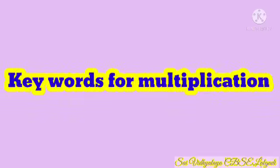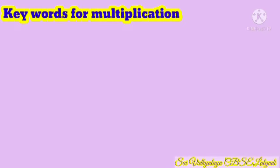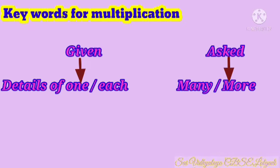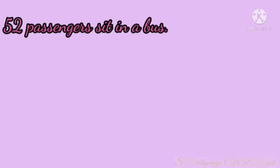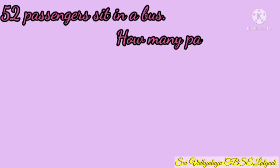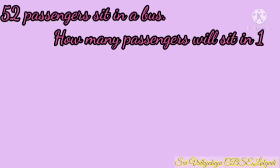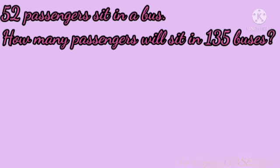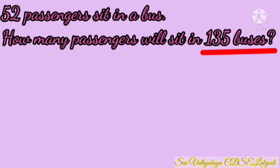Let's learn word problems. The keywords for multiplication in word problems: first, details of one is given — words like 'one' or 'each' — and asked for many or more. For example: 52 passengers sit in a bus. How many passengers will sit in 135 buses? Passengers in one bus is given; we are asked for many.